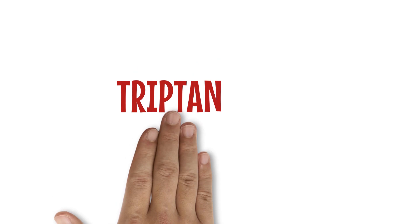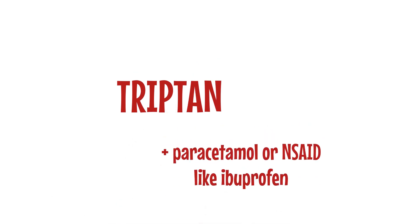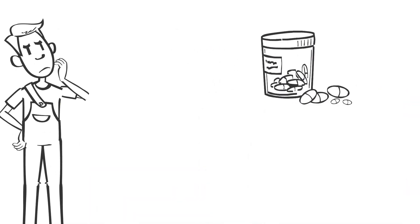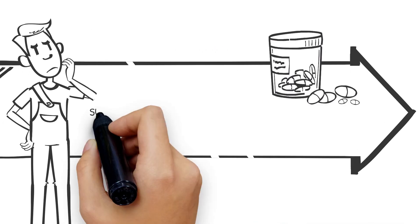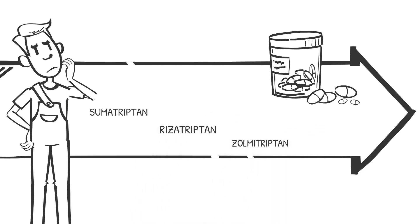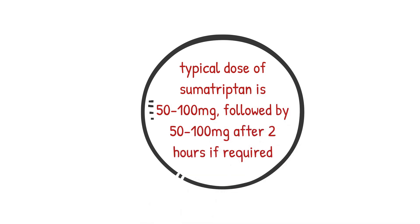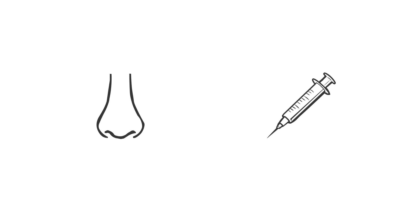If the analgesic is inadequate, consider a triptan alone or in combination with paracetamol or an NSAID like ibuprofen. Sumatriptan is usually the first choice of triptan. Other examples include rizatriptan and zolmitriptan. When given orally, the typical dose of sumatriptan is 50–100mg initially, followed by 50–100mg after 2 hours if required. Sumatriptan is also available as a nasal spray and an injection.